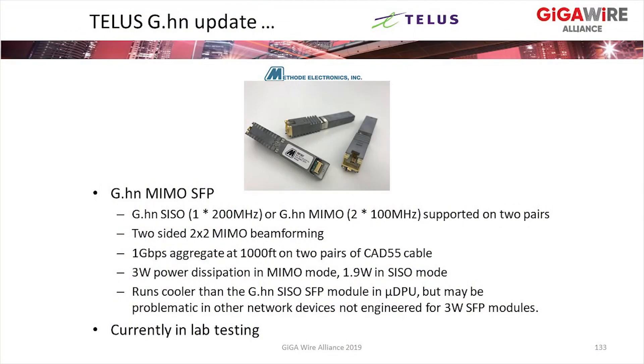One of the next innovations we're working on is G.HN MIMO. With Max Linear's chip implementation of G.HN, it has bonding at the transceiver level — if you want to do bonding or MIMO, you just add an extra AFE. You don't have to burn two ports on a DPU; a 24-port DPU can do single-line or bonding on everything with no reduction in port density. With the new MIMO SFP module, we can support 2x100 MHz G.HN MIMO across two pairs with full two-sided closed-loop MIMO beamforming, achieving about 1 Gbps aggregate on 1,000 feet of Cat5e cable over two pairs.